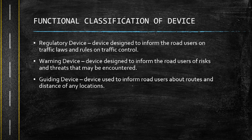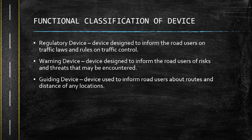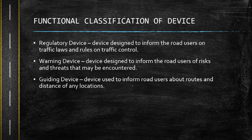What are the functional classifications of devices? There are regulatory devices, warning devices, and guiding devices. Regulatory devices are designed to inform road users about traffic laws, rules, and regulations — informing them what traffic laws and rules they must follow. Warning devices are designed to inform road users of risks and threats that may be encountered if they are not disciplined in driving or using traffic. Guiding devices are used to inform road users about routes and distances of any location — informing drivers about routes and how many kilometers remain before they reach a certain destination or location.